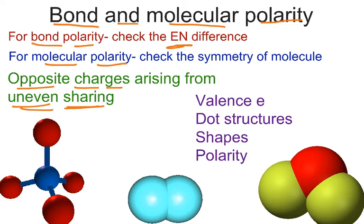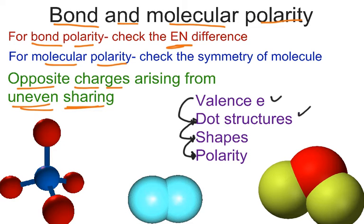In our journey, we've gone from valence electrons to dot structures, then from dot structures to shapes, and then from shapes to polarity, because shapes help determine whether a molecule is polar or non-polar. Everything is foundational. You have to know valence electrons, dot structures, and how to draw your shapes properly. The determination of shapes will help you figure out whether a molecule is polar or non-polar.